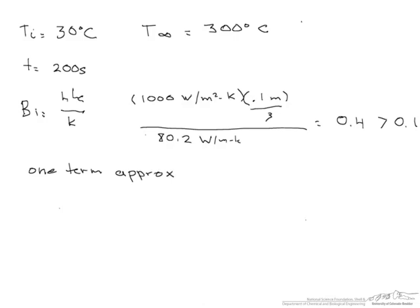And in order for us to be able to do that, we have to calculate the Fourier number, which is a dimensionless time, and it has to be greater than 0.2.